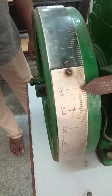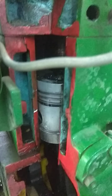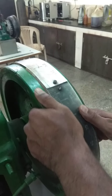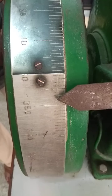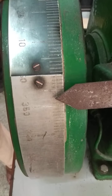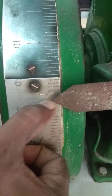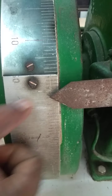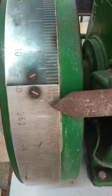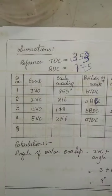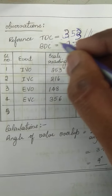Now we will try to find the top dead center. We will move the piston towards the top dead center by rotating the wheel. When the piston reaches top dead center, you stop and note down the graduation value. The value at the topmost position of the piston is 353. So 353 is the angle at which the piston is at top dead center — note down this value.